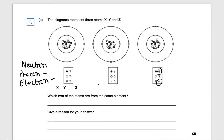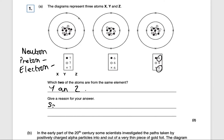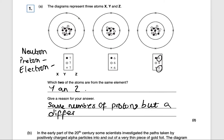Remember, isotopes have the same number of protons but a different number of neutrons, so they must have the same number of protons. In this case, Y and Z have the same number of protons and a different number of neutrons, so the answer is Y and Z are isotopes of the same element. That will get you two marks.